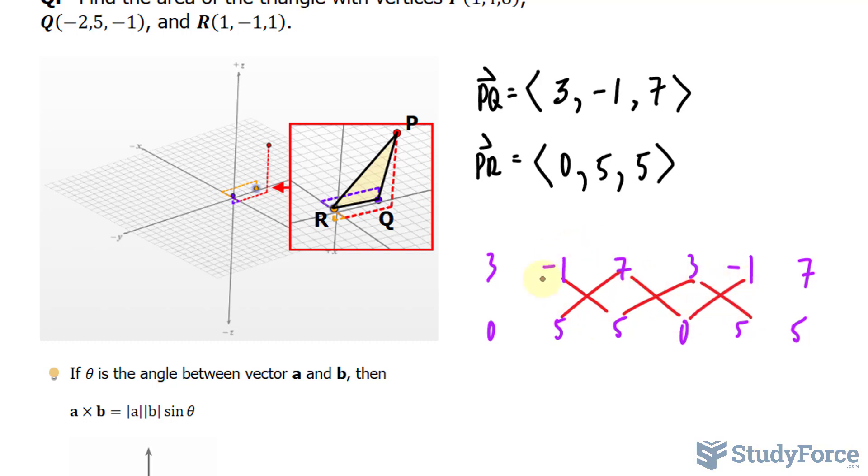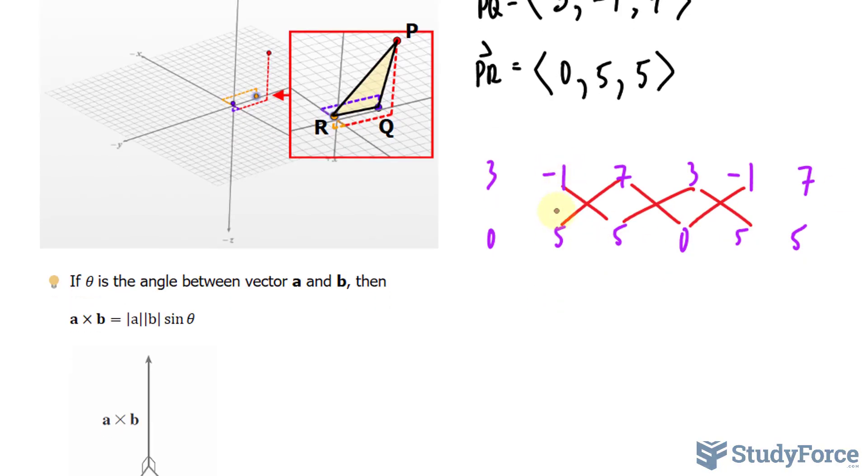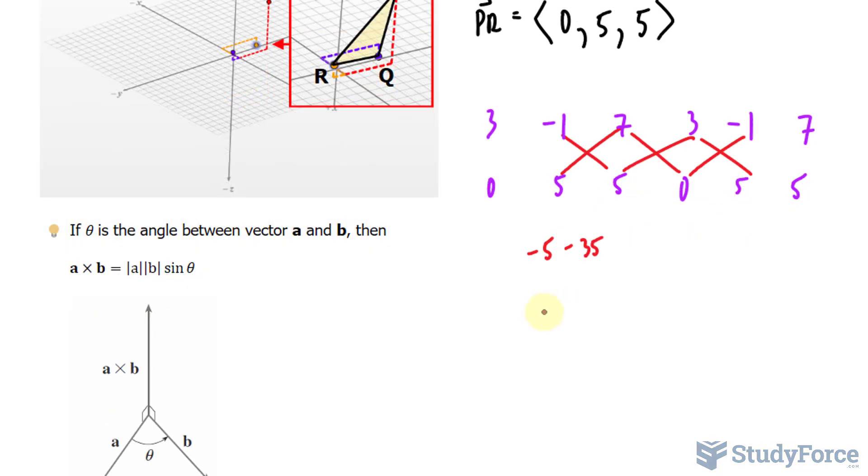You multiply these out like this. So take, for example, that first cross. Minus 1 times 5 is negative 5. Minus 7 times 5, 35. This is equal to negative 40.